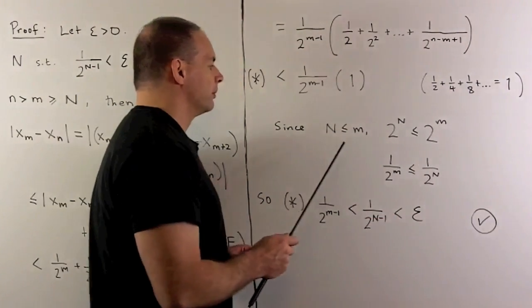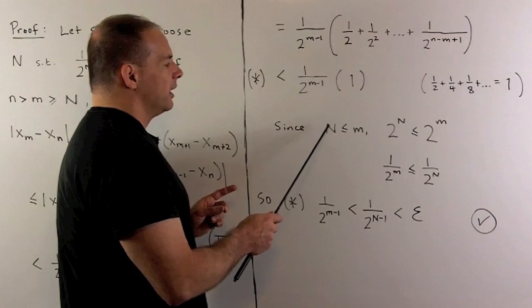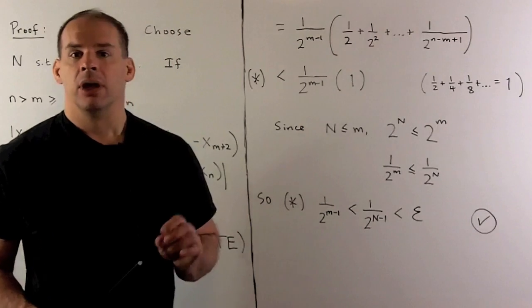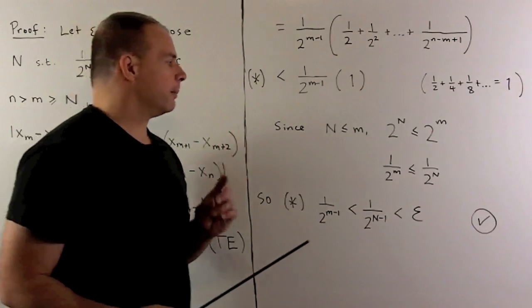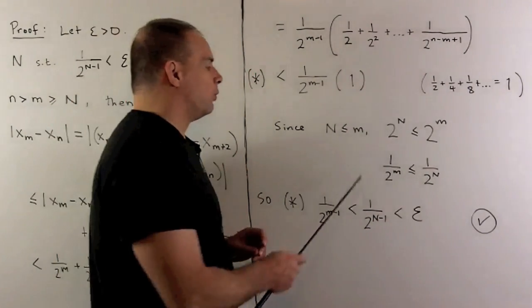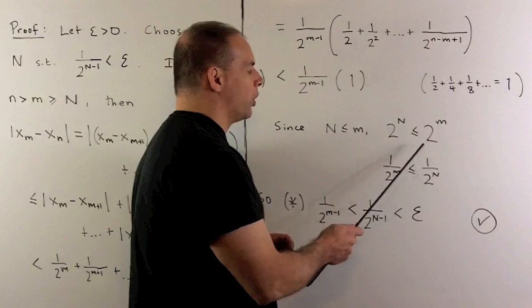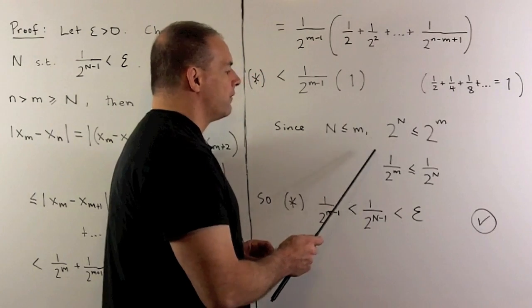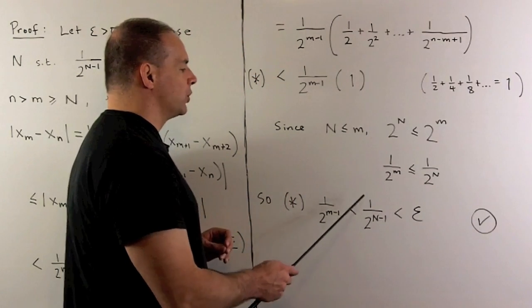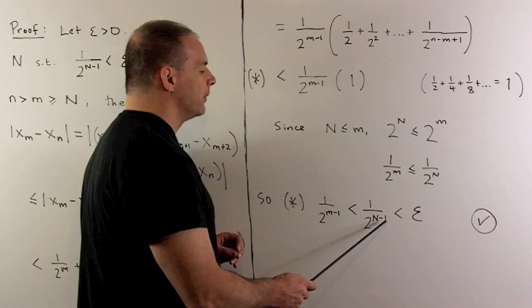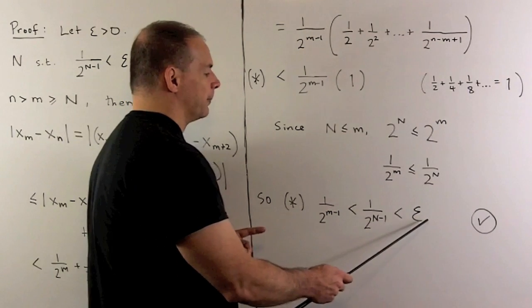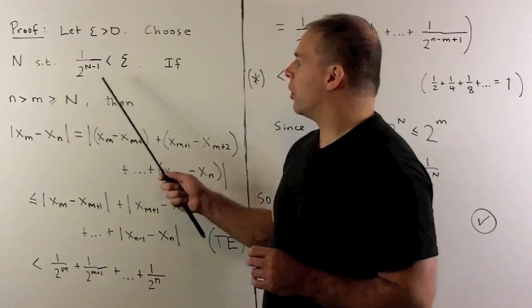Let's do a little manipulation. If I have N ≤ m, because 2^x is an increasing function, we have 2^N ≤ 2^m. If I divide both sides by 2^m times 2^N, we have 1/2^m ≤ 1/2^N. If I multiply through on both sides by two, that's going to give me 1/2^{m-1} ≤ 1/2^{N-1}. This is the term I want to set less than epsilon, so that's going to be the N we use.